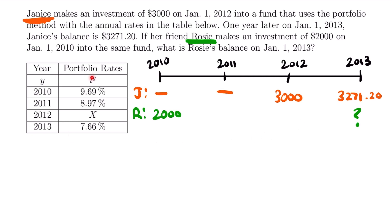If you look at our table of portfolio rates, you'll notice that one of them is missing—the portfolio rate for 2012 is represented with X. We don't know what that is, though we do know the rest of our portfolio rates. This is an important part of the problem: if we want to know the accumulation of Rosie's $2,000 at the beginning of 2013, we need the portfolio rate for 2012. We need the rate for 2010 to take $2,000 to 2011, then 2011 to take it to 2012, and then 2012 to take it to 2013. Since we don't know the 2012 portfolio rate, we currently can't calculate the accumulation of Rosie's account.